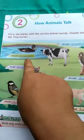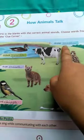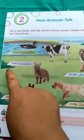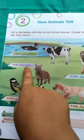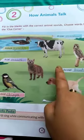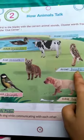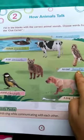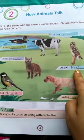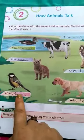A duck quacks. A cow moos. A cat meows. An owl makes a sound — hoots. A bird...